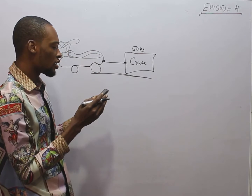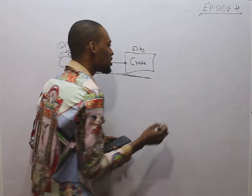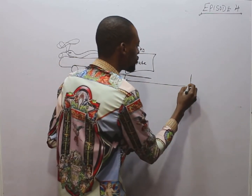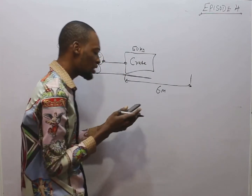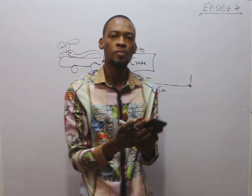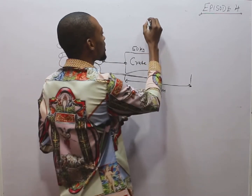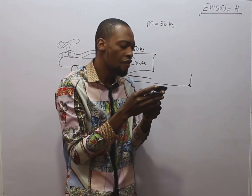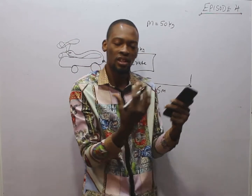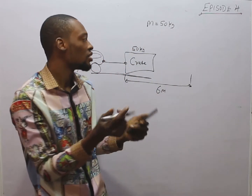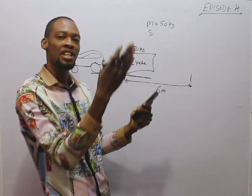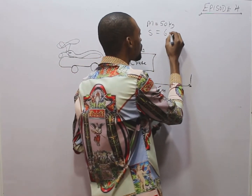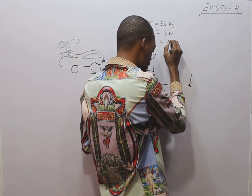The crate is dragged along a horizontal floor. Horizontal means like this, while vertical is like this. The crate moves to a distance of 6 meters, and it takes 3 seconds to cover that distance. So we have: mass M = 50 kg, distance s = 6 meters, and time t = 3 seconds.